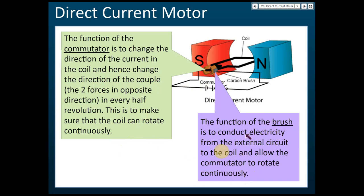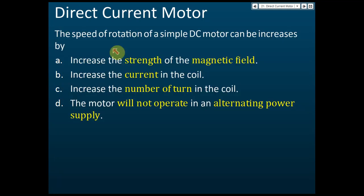The function of the commutator is to change the direction of the current in the coil and hence change the direction of the couple in every half revolution — this ensures the coil can rotate continuously. The function of the carbon brush is to conduct electricity from the external circuit to the coil and allow the commutator to rotate continuously.